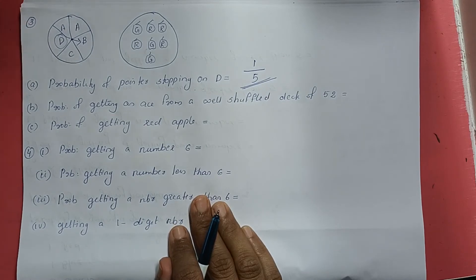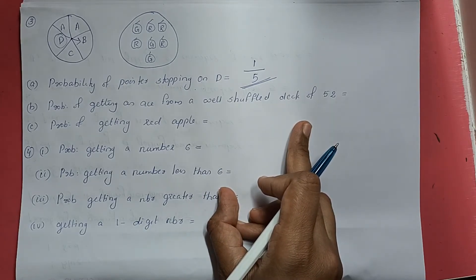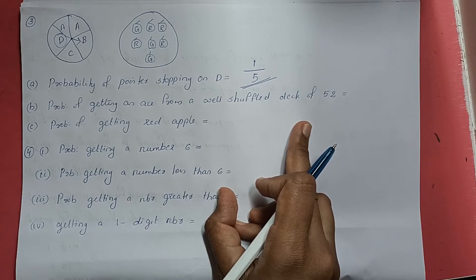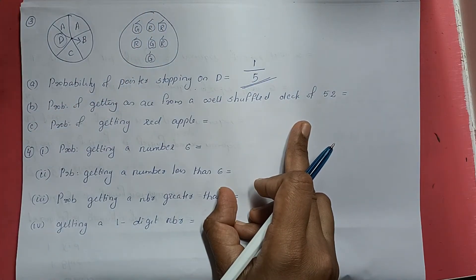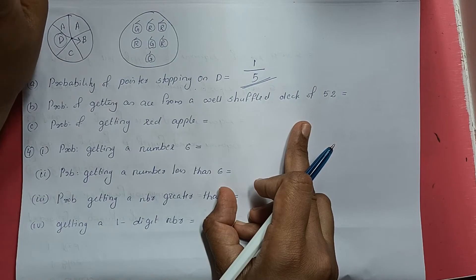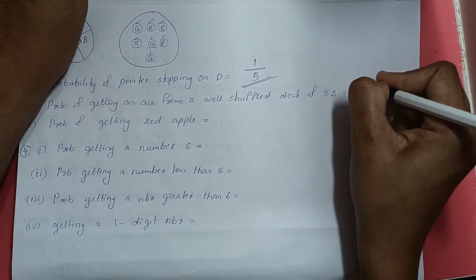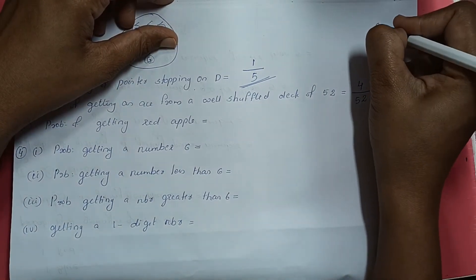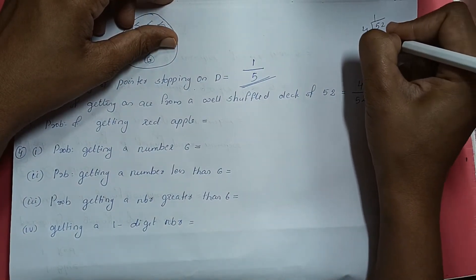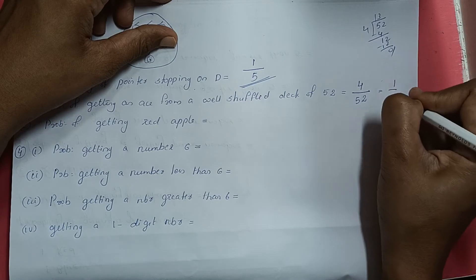Next, probability of getting an ace from a well shuffled deck of 52 cards. There are 4 suits: heart, diamond, club, and spade. Each suit has one ace, so there are 4 aces total. Probability = 4 divided by 52. We can simplify: 52 divided by 4 is 13. So the probability is 1 by 13.